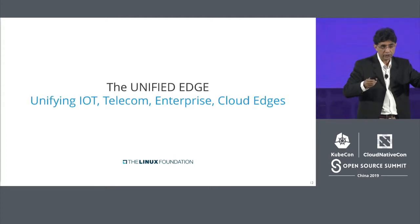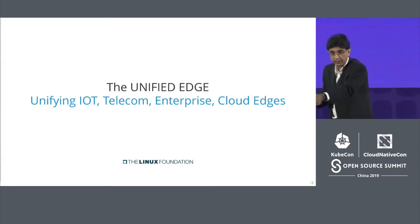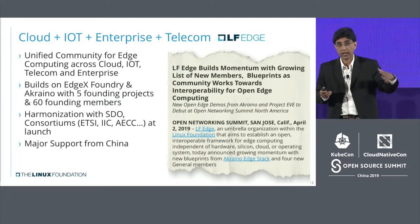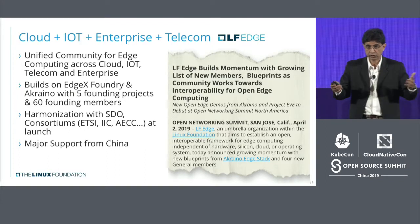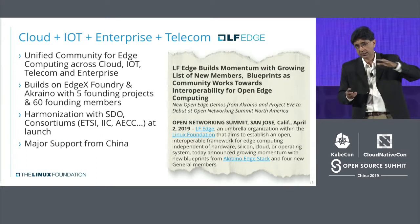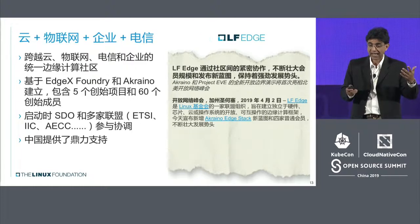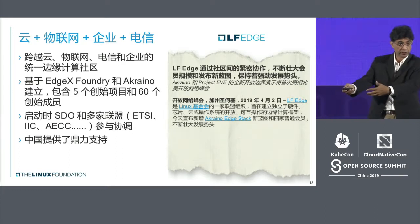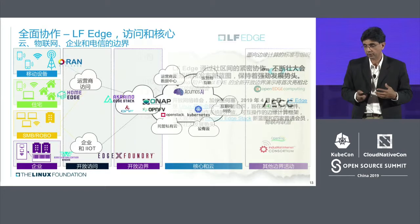When we move to the edge, today you have a fragmented edge: a cloud edge, an IoT edge, an enterprise edge, and now a telco edge. We believe there needs to be a unified edge. So we announced in 2019 an umbrella project called LFEdge, hugely supported by folks here in China, that unifies the different edge communities. It was founded by 5 founding projects and 60 founding members, and today we are up to 7 projects, including Baidu's OpenEdge being contributed into LFEdge, and 70+ members.